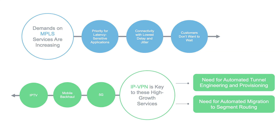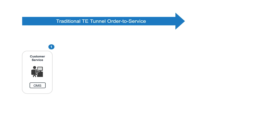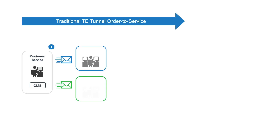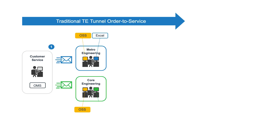Let's look at a traditional traffic-engineered tunnel provisioning order-to-service challenge, driven by the need to support a new VPN service request or IP-based communication services. Firstly, it's complex. The engineer needs to gather information about the network from multiple systems before defining the path. Does a tunnel already exist from the PE on the A side to the PE on the Z side? Does it have sufficient capacity, the proper constraints, the required quality of service, latency, or protection needed for that service?